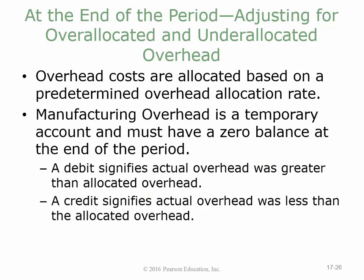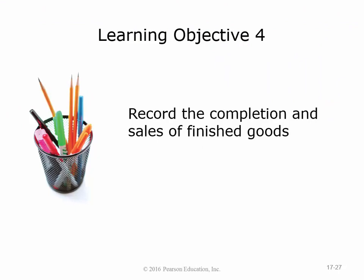Manufacturing overhead is a temporary account, so it must have a zero balance at the end of the period. A debit balance in manufacturing overhead means actual overhead was greater than allocated overhead — under-allocated. A credit balance means actual overhead was less than allocated — over-allocated. We'll see this more clearly in an example.